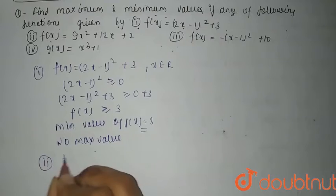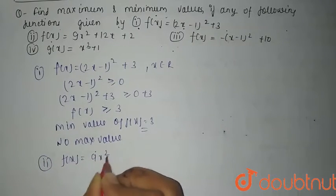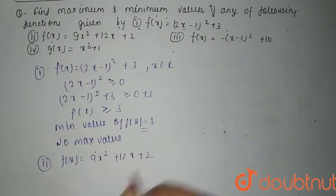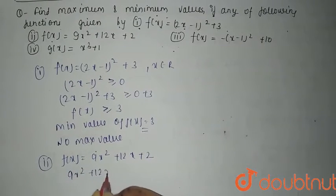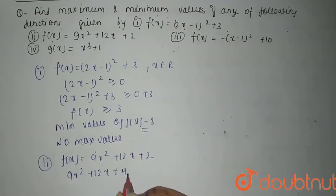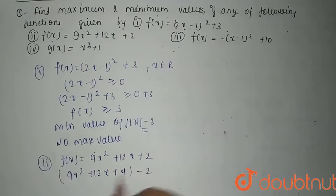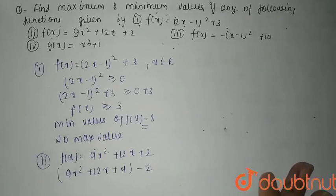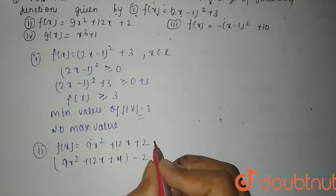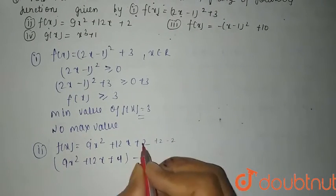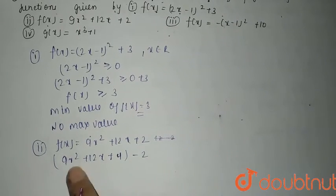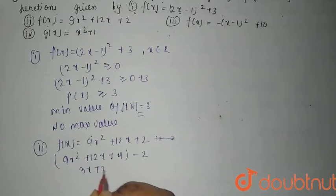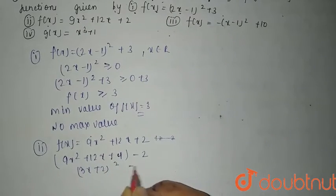The second function is f(x) = 9x² + 12x + 2. We can write this as 9x² + 12x + 4 - 2, by adding 2 and subtracting 2. So this becomes (3x + 2)² - 2.